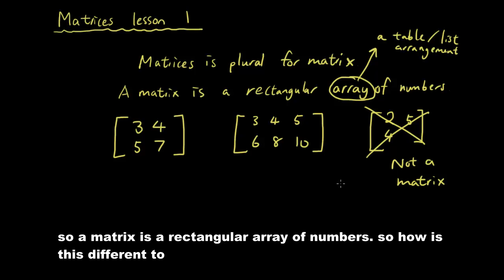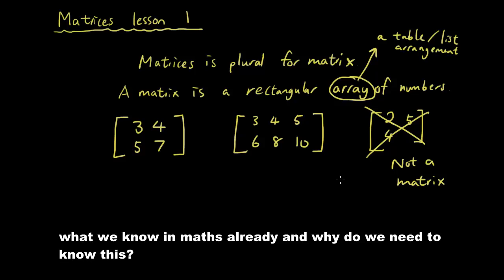Alright, so a matrix is a rectangular array of numbers. So how is this different to what we know in math already and why do we need to know this?